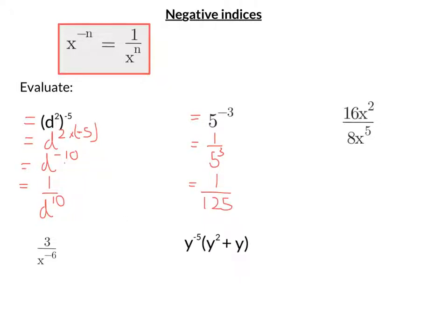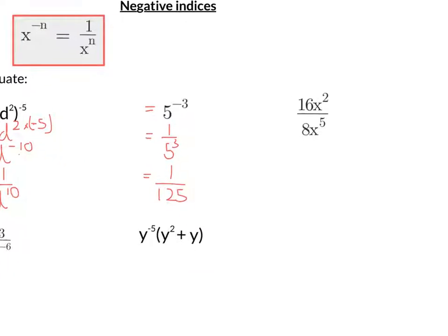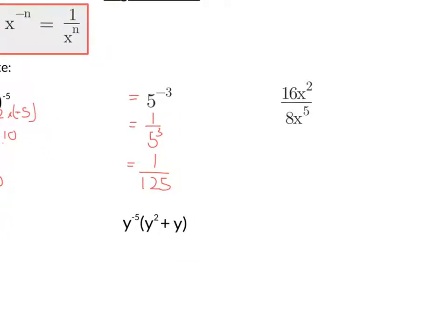So moving on to my next example here, 16x squared over 8x to the 5. First, let's deal with the 16 and the 8. So 16 divided by 8 is 2.